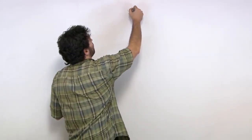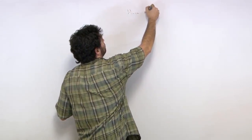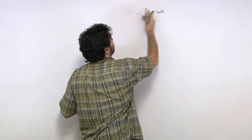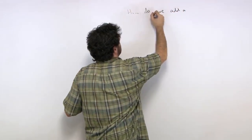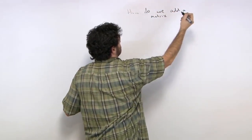We've entered in the wonderful world of the matrix. So how do we add a matrix? How do we add matrices?